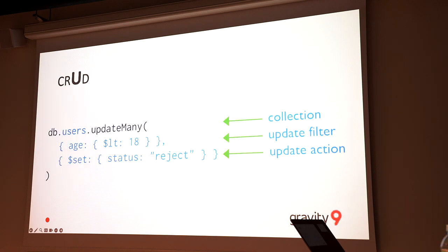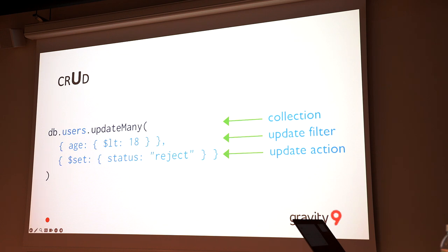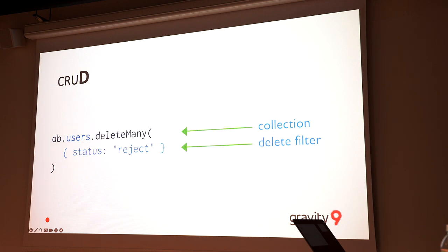Updating is quite similar — you have a condition based on which you want to update, and then specify what fields to set. For example, set status to 'reject' when someone is under 18. Delete: deleteMany with a condition — it deletes. It's extremely simple to do CRUD operations in Mongo.